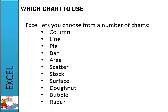First I'll just remind you of the different kinds of charts there are. There are column, line, pie, bar, area, scatter, stock, surface, donut, bubble and radar. All of these are possible in Excel.